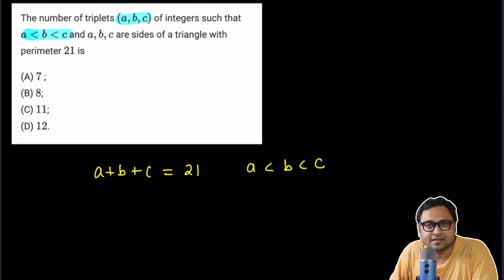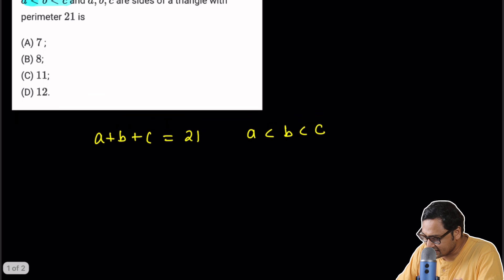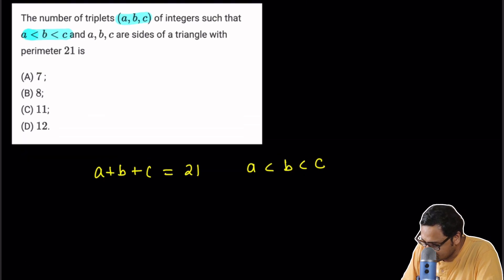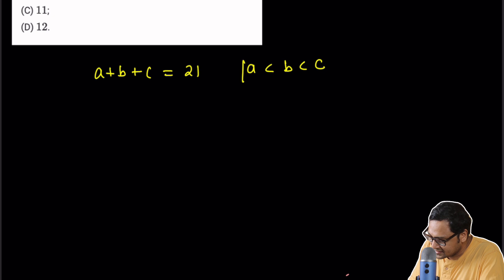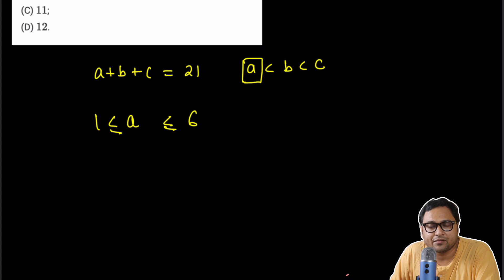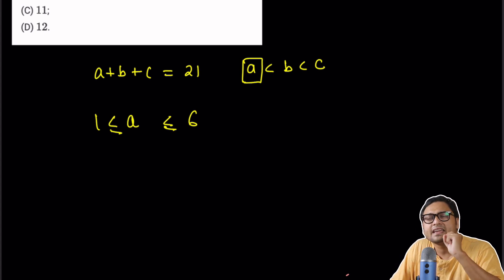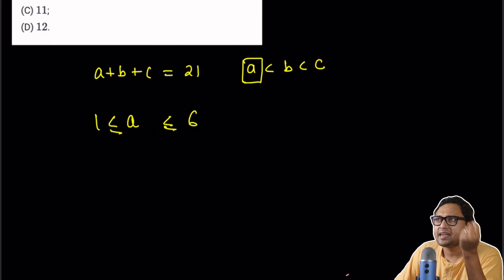How many such triples are there? The first thing you realize is that since these are all integers, the smallest number that is A can be between 1 and 6. The value of A can range between 1 and 6. Why is that? Why can't A be 7? Well, if A is 7,